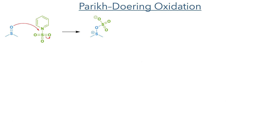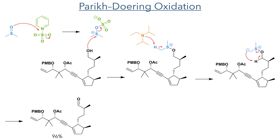In the next step the researchers carried out a Parikh-Doering oxidation. DMSO first adds to a sulfur trioxide pyridine complex, forming an activated sulfonium species that is then attacked by the hydroxyl group. This intermediate is then deprotonated by DIPEA and the resulting negative charge can abstract a proton and oxidize the hydroxyl group to an aldehyde in a mechanism that is very similar to the Swern oxidation.